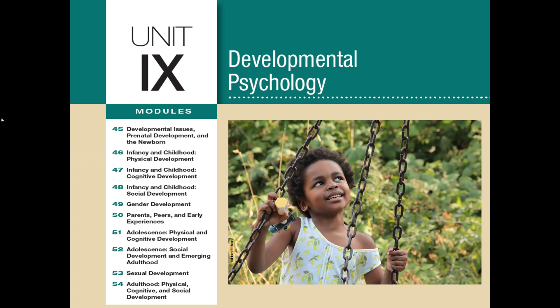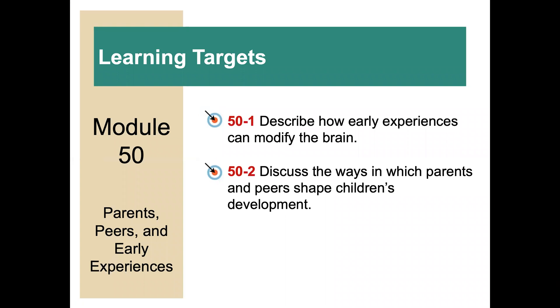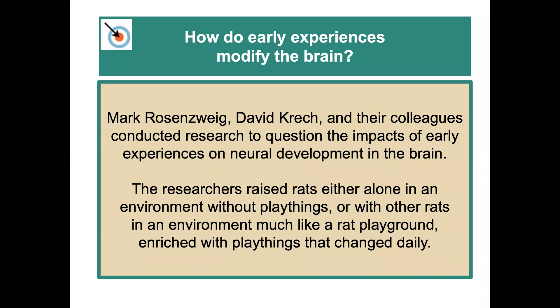Welcome to Unit 9, Developmental Psychology, Module 50: Parents, Peers, and Early Experiences. These slides are aligned with Myers' Psychology for the AP Course, Third Edition. This module is a short one — it has two learning targets: describe how early experiences can modify the brain, and discuss the ways in which parents and peers shape children's development.